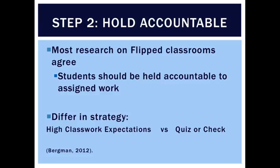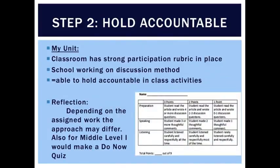Step two: most research agrees that you need to hold students accountable for the work they were assigned. However, there's a huge difference in strategy. One way is to make the classwork have high expectations, so that students would need to do the pre-work in order to engage with the classwork alongside everyone else. Another method would be to assign a quick check or reading quiz to make sure they were staying up to date. In my classroom, we had a strong participation rubric in place, and the school has been working on a discussion method, so being prepared for discussion is something students can identify and point to. I was able to piggyback on top of that.